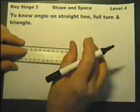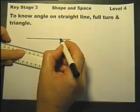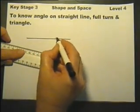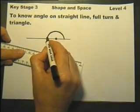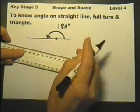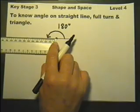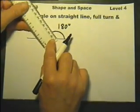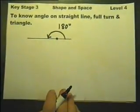So if we draw a straight line and point anywhere along there, to appreciate that the angle around there is 180 degrees. In other words, if I start from there and I turn round to there, 180 degrees.